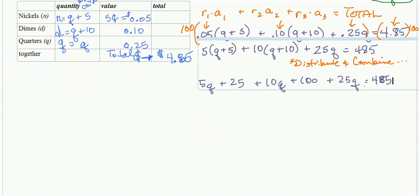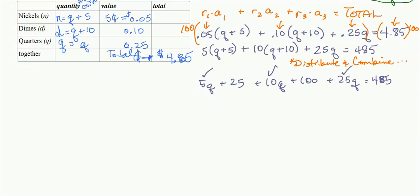Let's go ahead and distribute, and then combine like terms, right? After you distribute, we should have 5Q plus 25 plus 10Q plus 100 plus that 25Q equal to 485. Now, we'll combine like terms. So, we have a 5Q and 10Q, that's 15, plus a 25. That makes 40 Qs. Then we have 100 plus 25, so 125 is equal to 485.